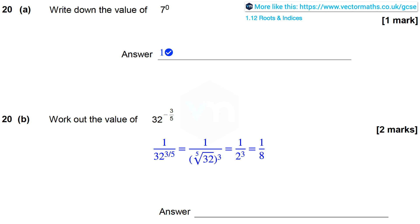Now the fifth root of 32 is 2 because 2 to the power 5 equals 32. So this equals 1 over 2 to the power 3, which is 1 over 8.